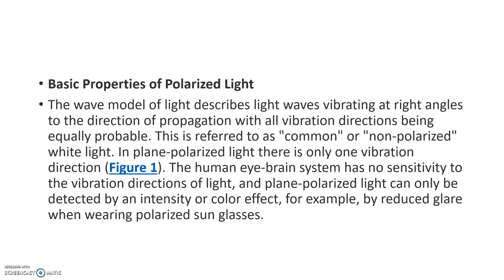In plane polarized light there is only one vibration direction, compared to common white light where all vibration directions occur. The human eye-brain system has no sensitivity to the vibration directions of light, so plane polarized light can only be detected by intensity or color effects — for example, by reduced glare when wearing polarized sunglasses.